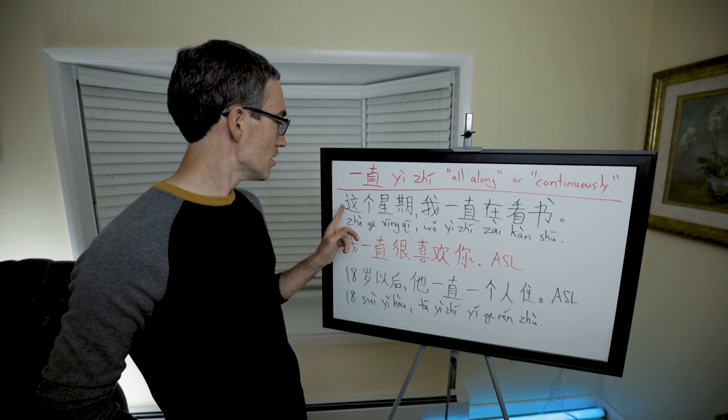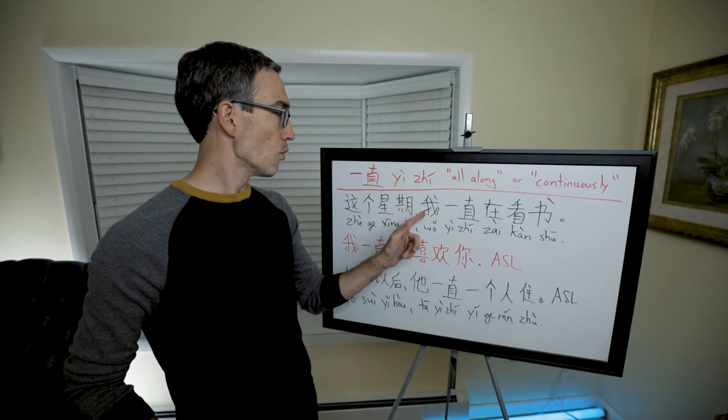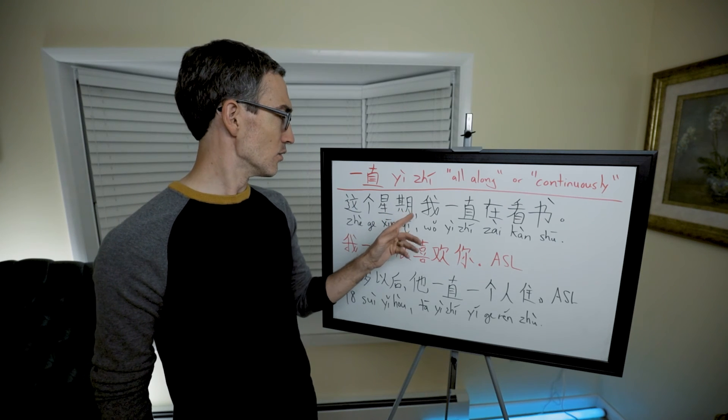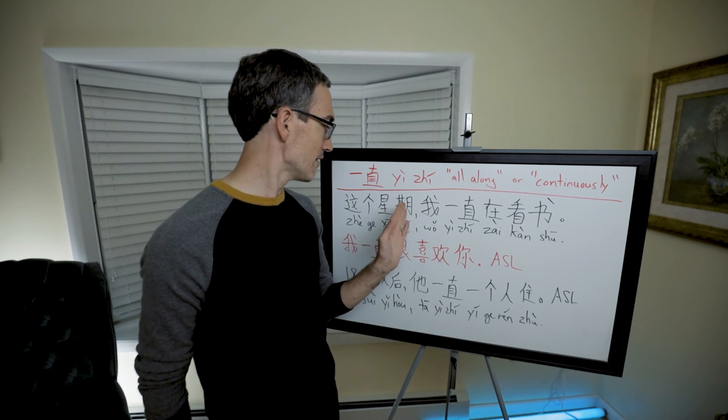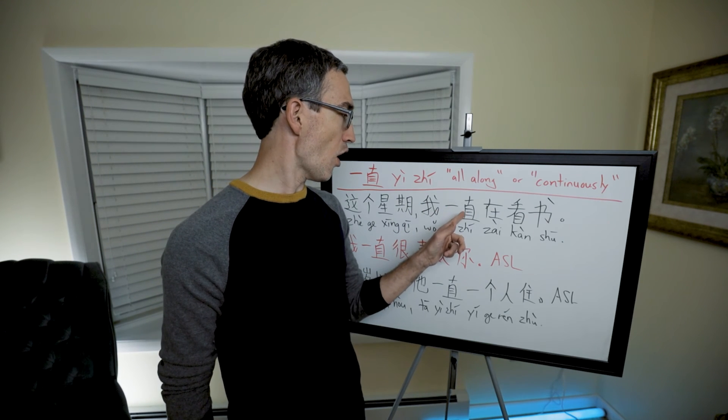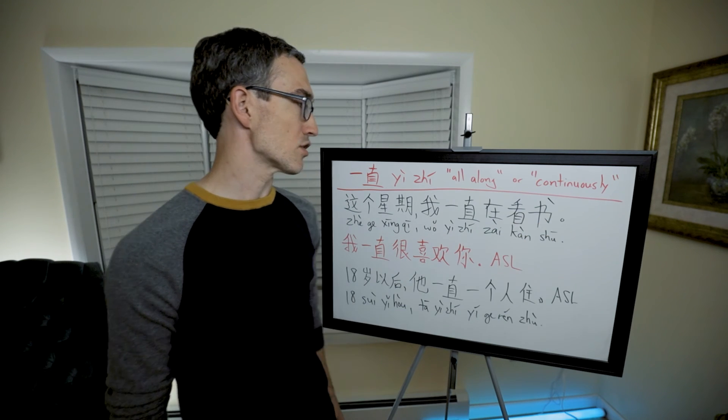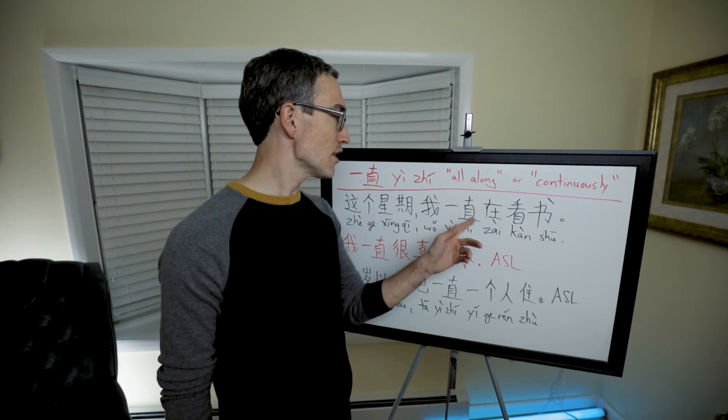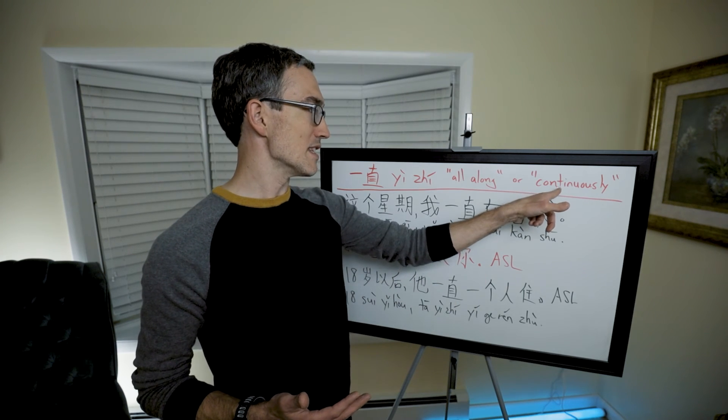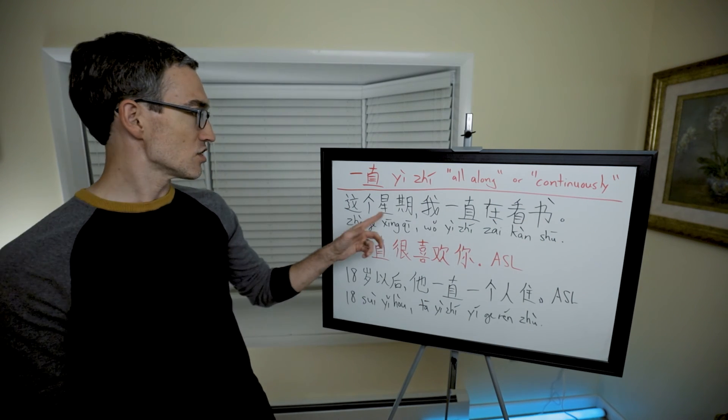So here's a couple of examples. 这个星期, or 这个, either one, 这个星期, 我一直在看书. This week, or this past week probably means that. 这个星期, 我, I, 一直, always, continuously, 在看书, reading, reading books or studying sometimes. So here we have 在, to make it continuously. And so it really means for this week, the whole time I was always doing this activity.